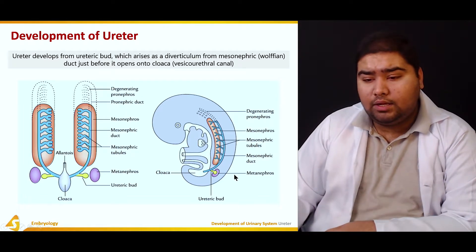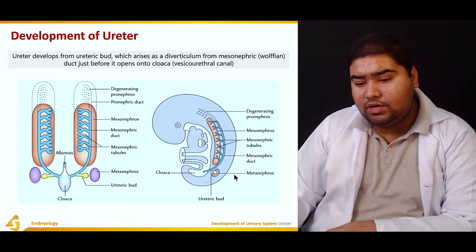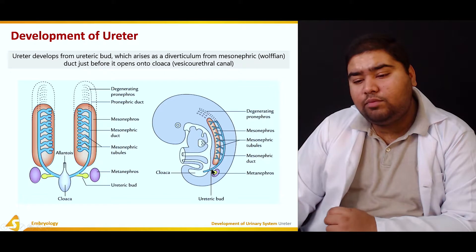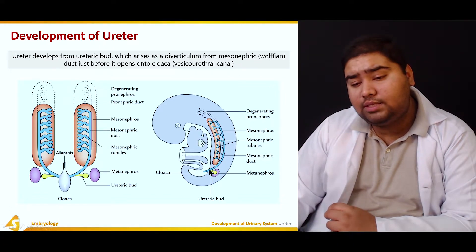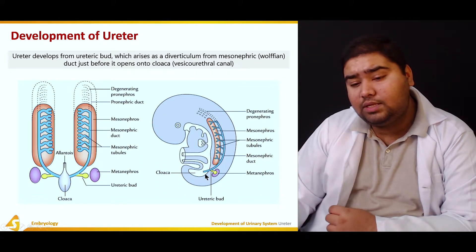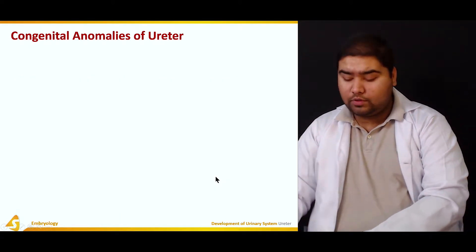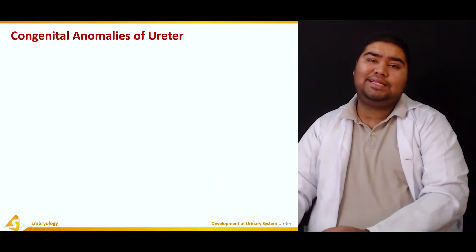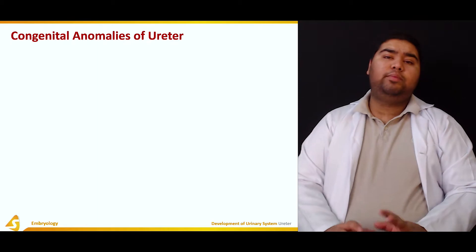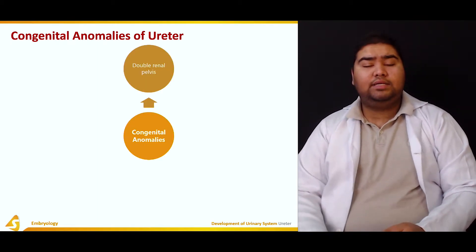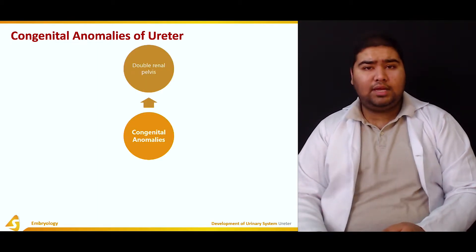In this figure we can see the ureteric bud originating from the Wolffian duct just before its entry into — just before its anastomosis with the cloaca. Now, what are the congenital anomalies of the ureter?